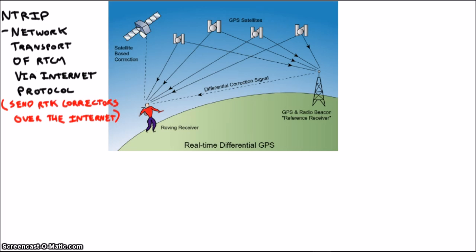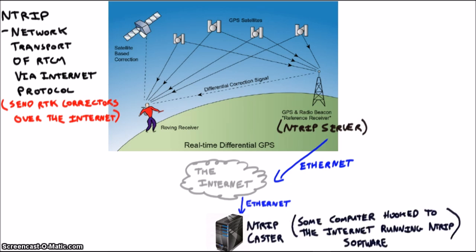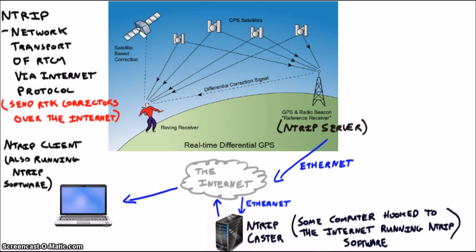To get NTRIP working, you need an NTRIP server, an NTRIP caster, and an NTRIP client. The server is the base station receiver providing the correctors. The caster is a computer you set up that takes in all the data from the base stations you have and forwards that data on to the client. The client is the computer you have set up on your boat that gets the data from the caster and sends it as a corrector to your pause.